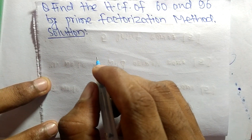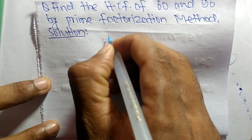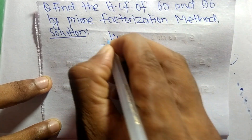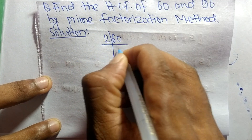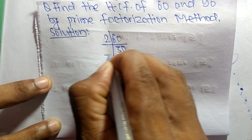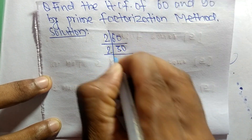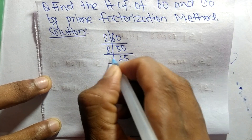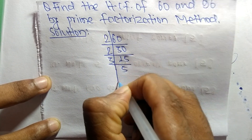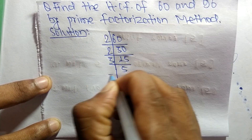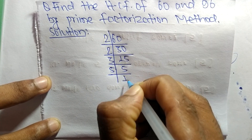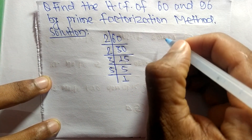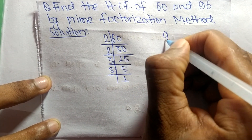First we find out the prime factors of 60. So it is 2 times 30, meaning 60. 2 times 15, meaning 30. 3 times 5, meaning 15. And 5 times 1, meaning 5. So these are the prime factors of 60.